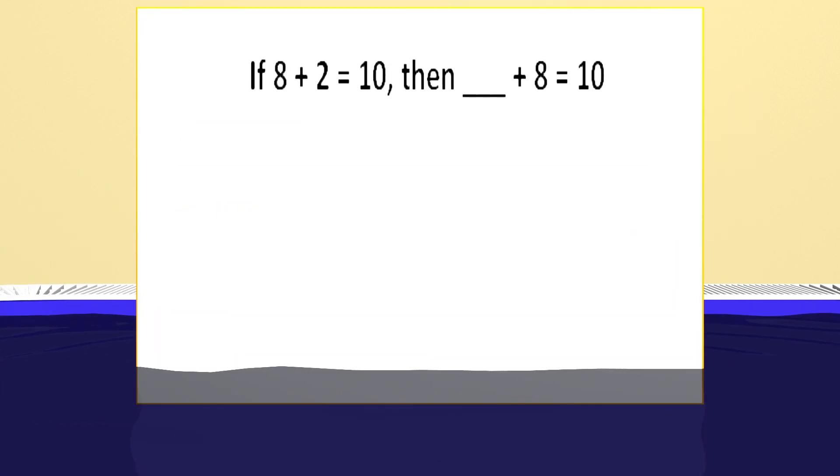Here is a math problem where we can use what we just learned. It says if 8 plus 2 equals 10, then blank plus 8 equals 10. We need to fill in the blank with the missing number. We know that 8 plus 2 equals 10. We just learned that in addition we can switch the 8 and 2 around and still get the same answer of 10.